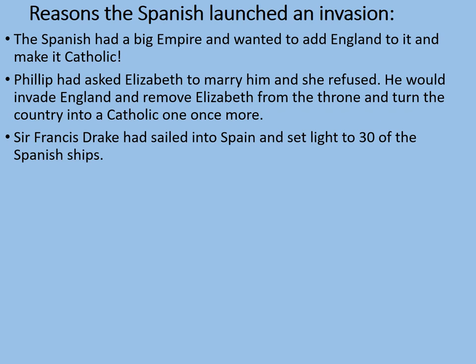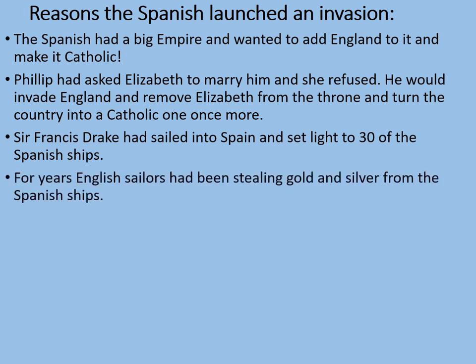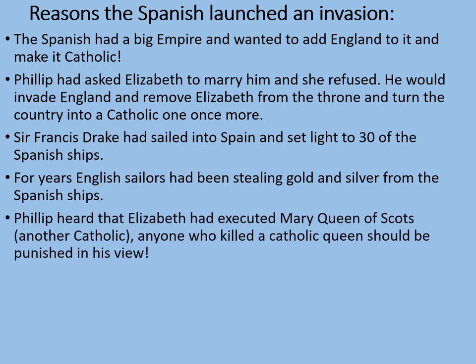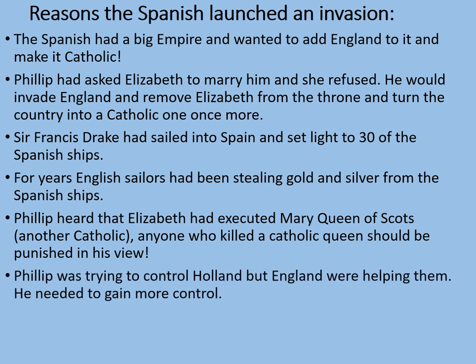Sir Francis Drake had sailed into Spain and set light to 30 Spanish ships — jokingly referred to as 'singeing the King of Spain's beard' — a serious humiliation for the Spanish, who wanted revenge. For years, English sailors had been stealing gold and silver from Spanish ships. Known as privateers, they were basically pirates but gave most of the money to Queen Elizabeth I. Philip had also heard that Elizabeth had executed Mary, Queen of Scots, another Catholic. Anyone who killed a Catholic queen should be punished in his view. Additionally, Philip was trying to control Holland but England was helping them, supporting Protestant people in the Netherlands against the Catholic Spanish.